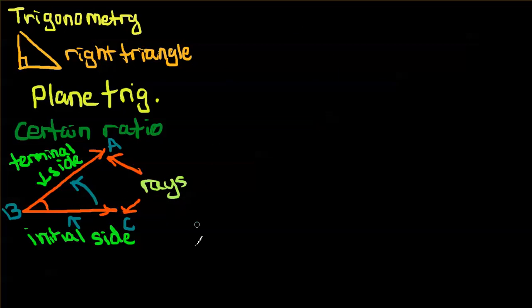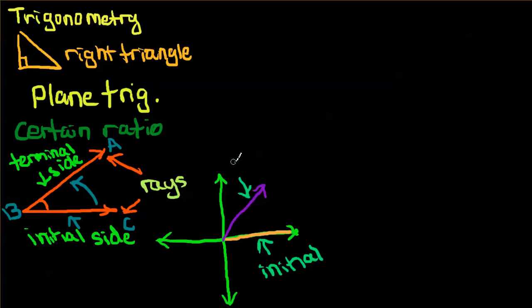Now if you see here, let's draw a coordinate plane here. I hope you're all familiar with this. If you take a look at this part of this coordinate plane right here, if you have an angle like this, then this orange side right here would be the initial side. And this would be, again, the terminal side.